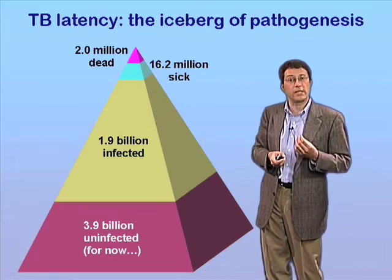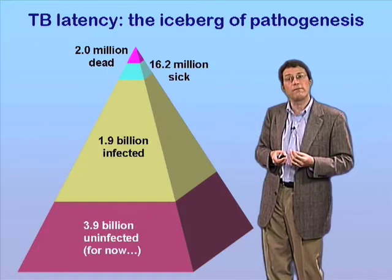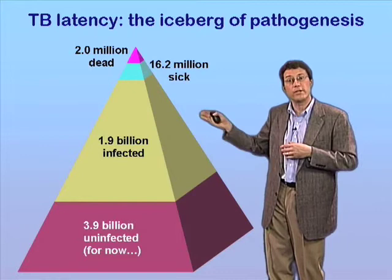The only tool we currently have against latent TB is 9 months of chemoprophylaxis with a drug called isoniazid. It's impractical to treat 2 billion people on a global basis with 9 months of drug therapy — it's not going to happen. So this is an enormous unmet need, something I'll talk about again later in global health.